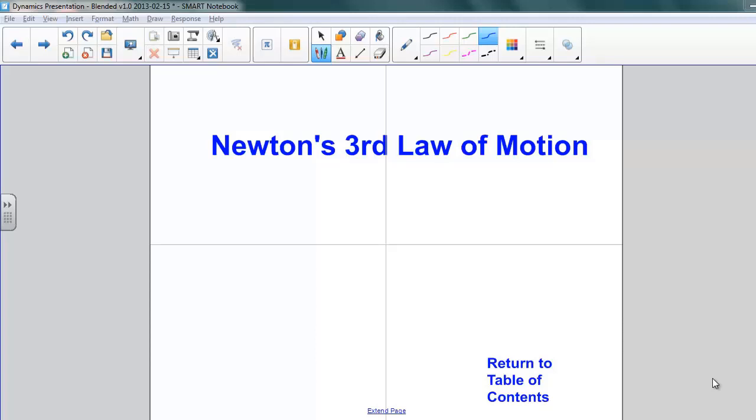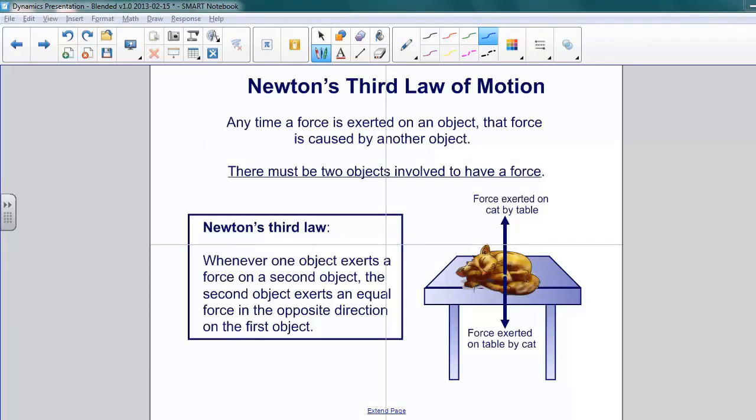Newton's Third Law of Motion. Now let's explore Newton's Third Law of Motion. Consider this: any time a force is exerted on an object, that force has to be caused by another object. That is to say, there must be two objects involved to have a force.